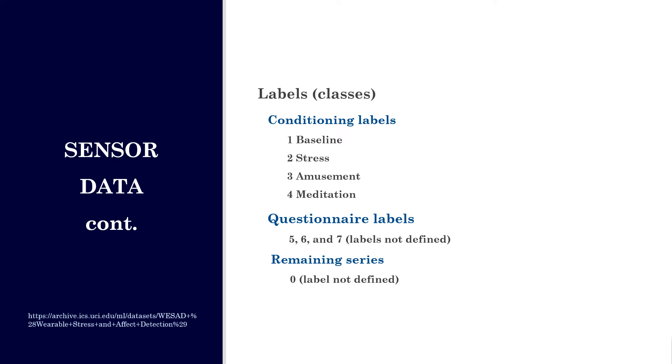The target variable is label. Label is the classes. These classes included conditioning labels: 1 baseline, 2 stress, 3 amusement, 4 meditation. Questionnaire labels 5, 6, and 7 were not defined. However, they corresponded to short duration time questionnaires and the remaining series label was zero, also not defined.